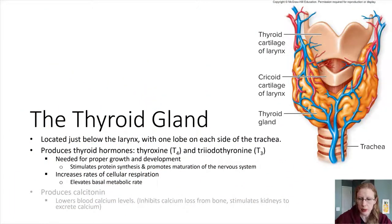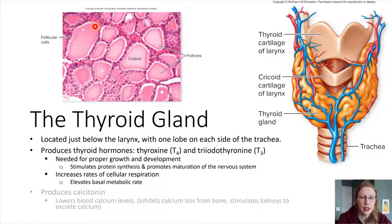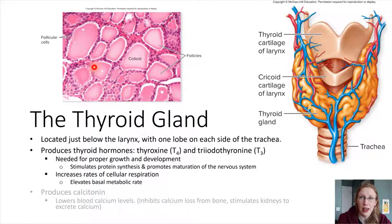Looking at a cross-section of the thyroid gland, you can see many hollow spaces called follicles. Each follicle is made up of a fluid-filled space and a lining of epithelial cells around it — that whole thing makes up one follicle. The substance in the middle is called colloid, and it is lined by follicular cells.